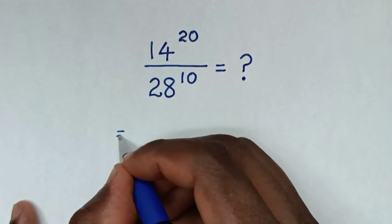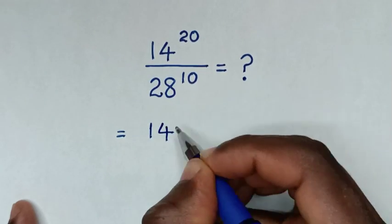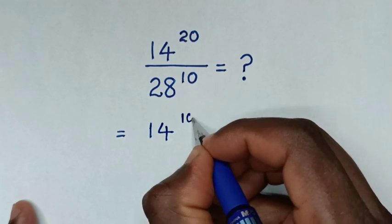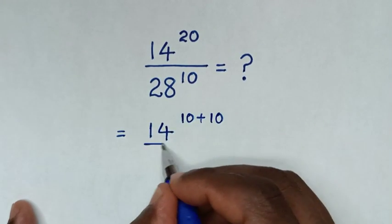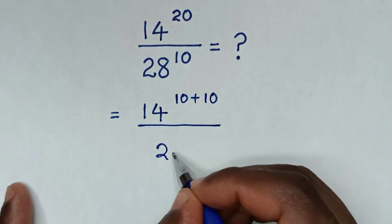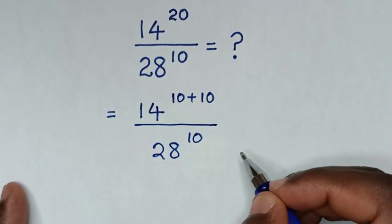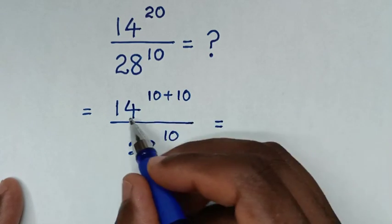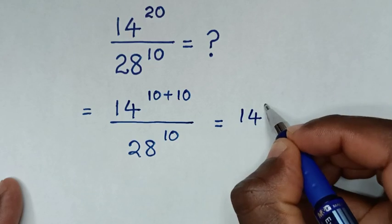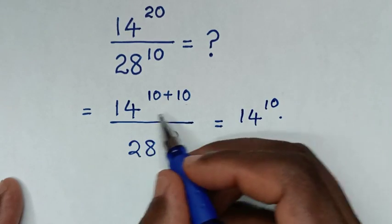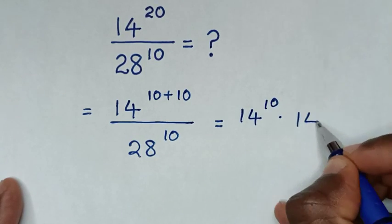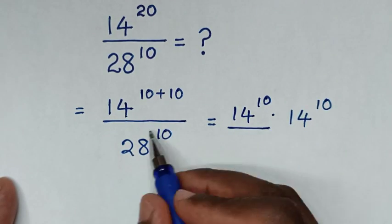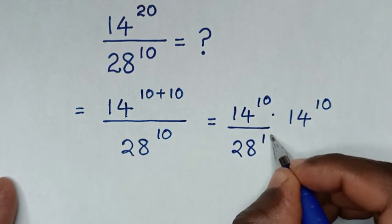So, it will be equal to 14, then power of 20 — to have a common power of 10, 20 is the same as 10 plus 10 — then over this exponent, which is 28 power of 10. Then it will be equal to 14 power of 10 plus 10, which is the same as 14 power of 10 times 14 power of 10, then divided by 28 power of 10.